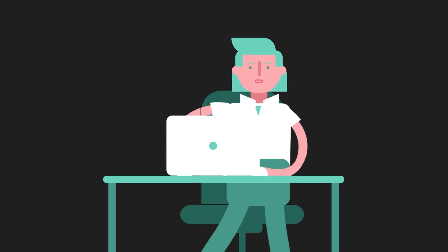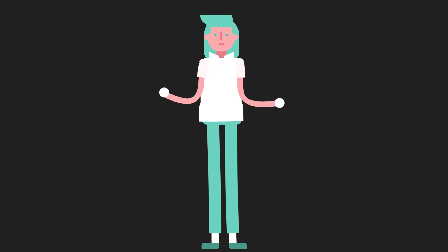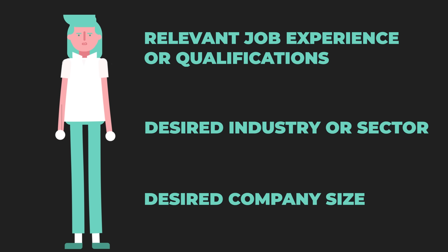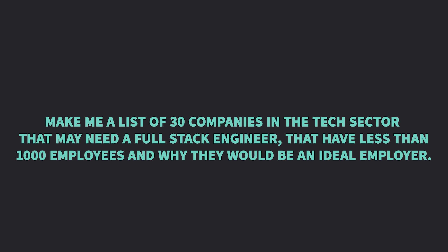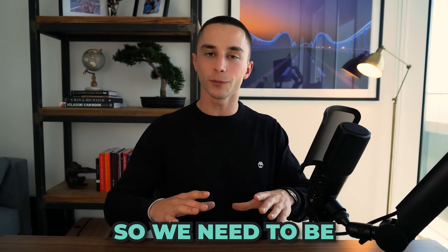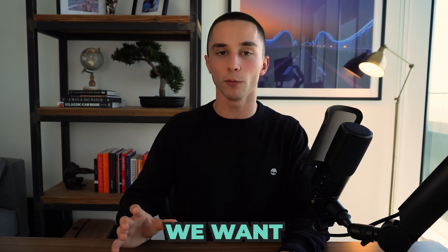So you are a job seeker and you want to find the perfect company to work for, but you have some specific requirements: your relevant job experience or qualifications, your desired industry or sector, and your desired company size. Imagine the bot has access to a database of jobs currently available in the United States. An example of a bad prompt that most people would write is: 'Make me a list of 30 companies in the tech sector that may need a full stack engineer, have less than 1,000 employees, and why they would be an ideal employer.' This kind of prompt is familiar to what you'd ask ChatGPT, but in production-grade prompt engineering you don't have the opportunity to go back and forth and tweak it. We need to be a lot more specific to get consistent output.